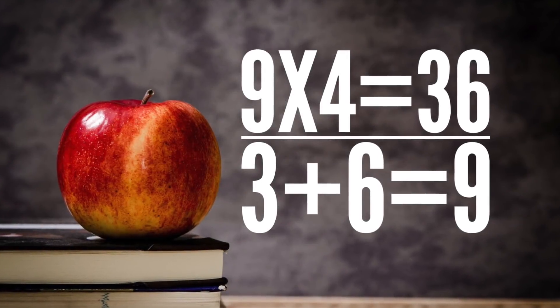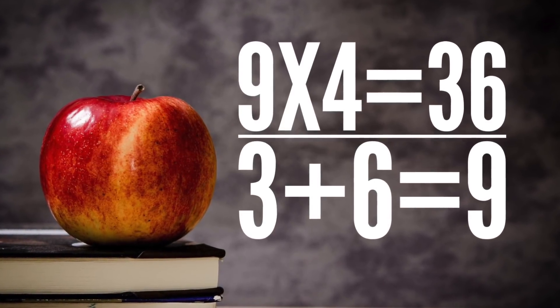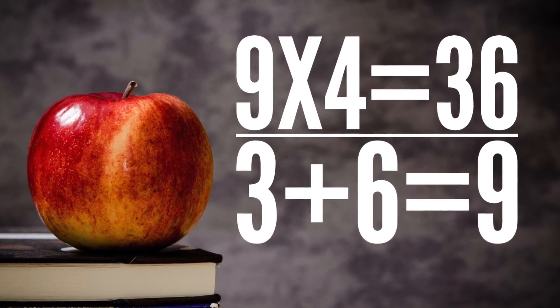9 times 4 is 36. If you take the 3 and the 6 of the 36, add them together, you get 9. I'll leave you to do some yourself.